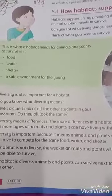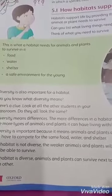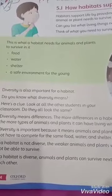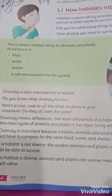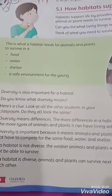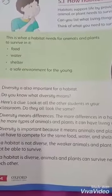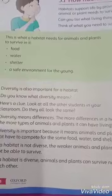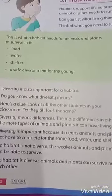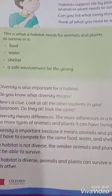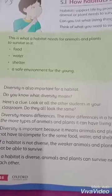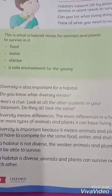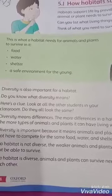In a forest, there are different types of animals living — some are carnivores, some are herbivores, and some are birds. Even small insects and worms are found in the soil. These living beings need different types of food, and their requirements for food, water, and shelter are different, so they are easily able to survive in that type of environment.